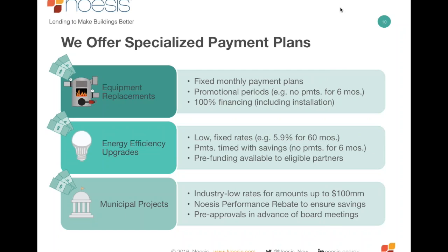For energy efficiency projects, we have separate products with pre-funding available for select partners. There are even more compelling custom credit packages designed to overcome specific EE objections. For munis, we have industry-low rates and a product that gives the flavor of a performance contract but can be approved in a couple of days with a two-page document. We can have munis pre-approved for financing before you ever walk in. Payments are simple to understand — we solve their maintenance problem, their equipment problem, and provide ways to pay outside of writing a check.